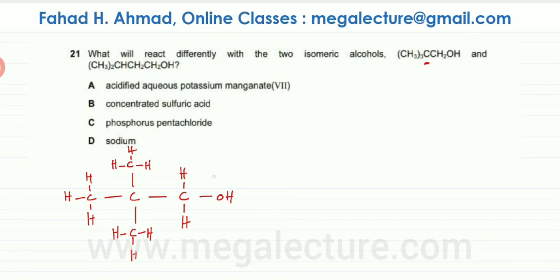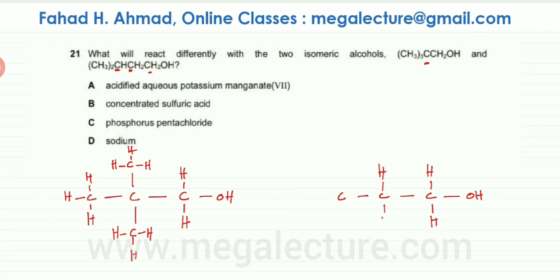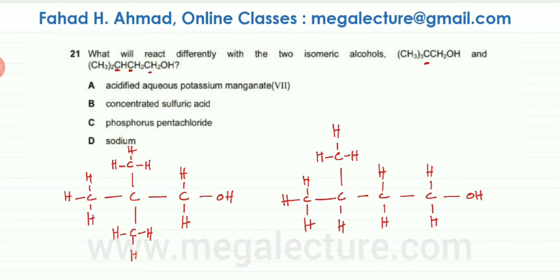Similarly, for the second molecule, starting with that central carbon atom: there is a CH2, another CH2, and then an OH — so CH2, CH2, and then OH extending to the right. Adding in the hydrogens, this central carbon is a CH, so one H is attached. On the left side there are two CH3 branches, so here is one and here is another CH3 branch to the left of that carbon atom.